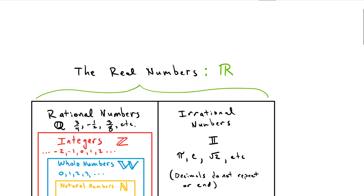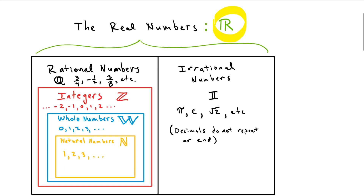Mathematicians really like symbols. So these things right here, for example, this R with kind of a larger left side — that is a symbol that represents the real numbers. And for all of the real numbers, we have different symbols that represent all of them. So we'll go over those as we go through.